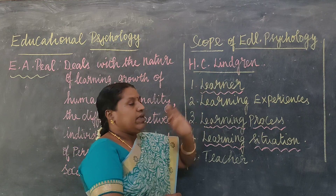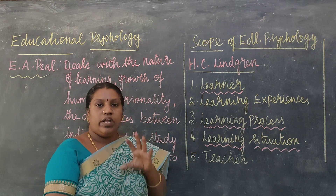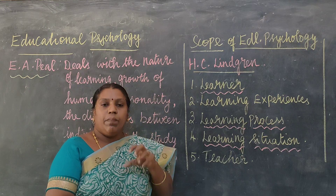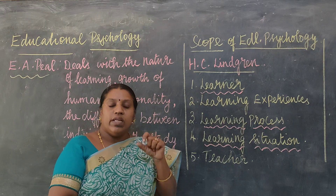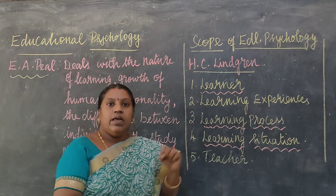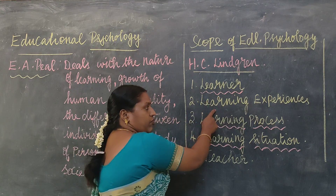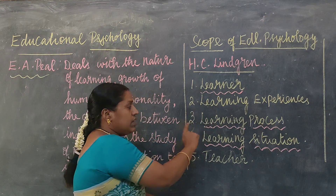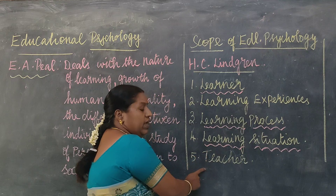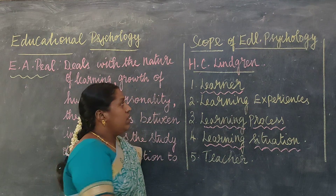H.C. Linder has given five important components — these are the boundaries or limits of educational psychology. They are: number one, the learner; the learning experiences; the learning process; the learning situation; and finally, the teacher.